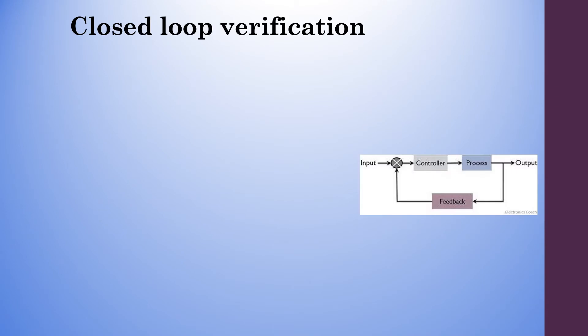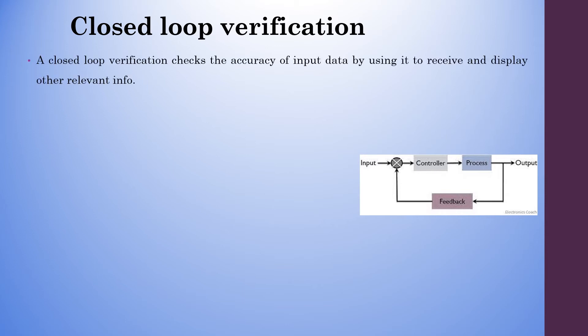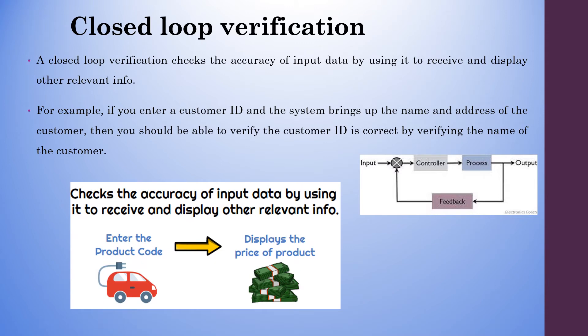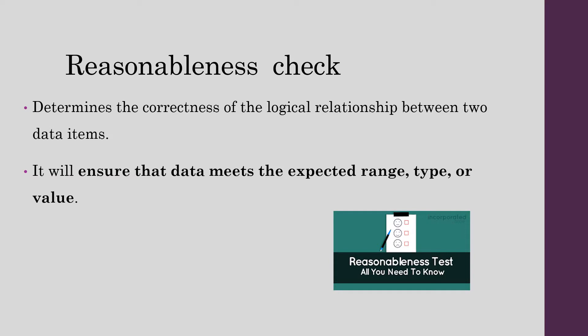Closed-loop verification checks the accuracy of data by using it to retrieve and display other relevant information. For example, if you enter a customer ID and the system brings up the name and address of that customer, you can verify the customer ID is correct by checking the name. Reasonableness check determines the correctness of the logical relationship between two data items, ensuring that data meets the expected range, type, or value.